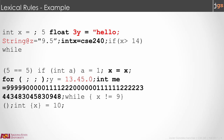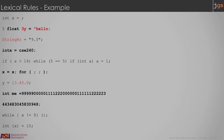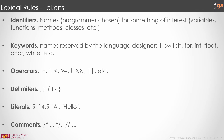Remember, the computer doesn't care about white spaces, so the previous program is exactly the same as the formatted one. In summary, the lexical rules define the following categories, called tokens: identifier, keyword, operator, delimiter, literal, and comment in the particular language.